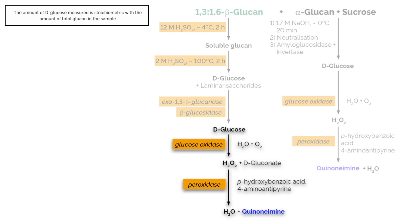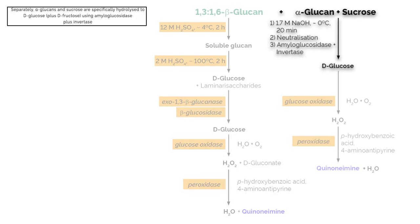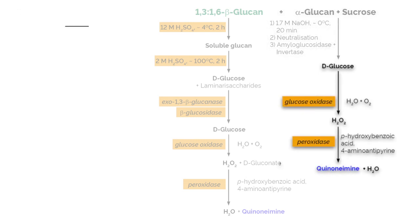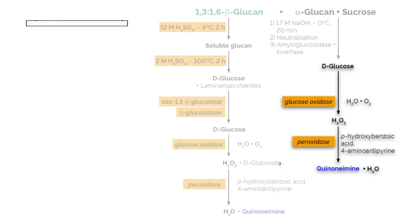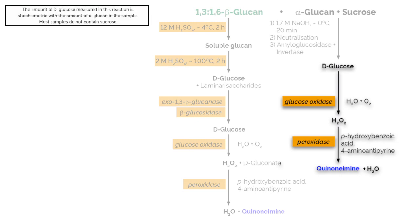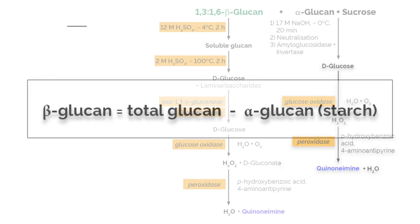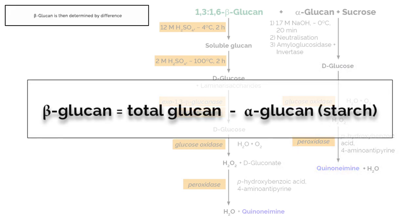The amount of D-glucose measured is stoichiometric with the amount of total glucan in the sample. Separately, alpha-glucans and sucrose are specifically hydrolyzed to D-glucose plus D-fructose using amyloglucosidase plus invertase. D-glucose from this reaction is also quantitatively measured with glucose oxidase peroxidase GOPOD reagent. The amount of D-glucose measured is stoichiometric with the amount of alpha-glucan in the sample. Most samples do not contain sucrose. Beta-glucan is then determined by the difference.